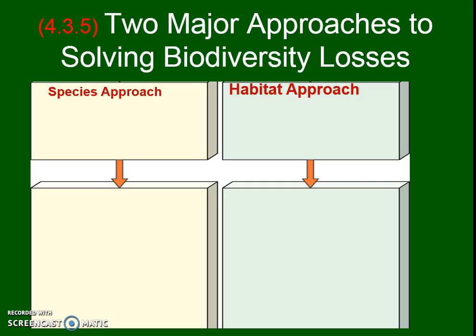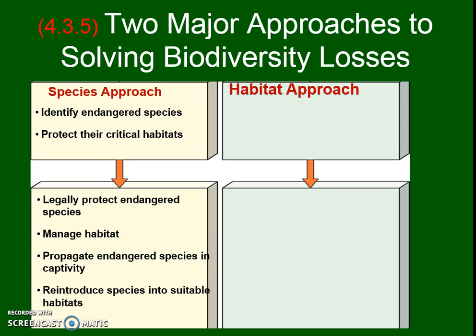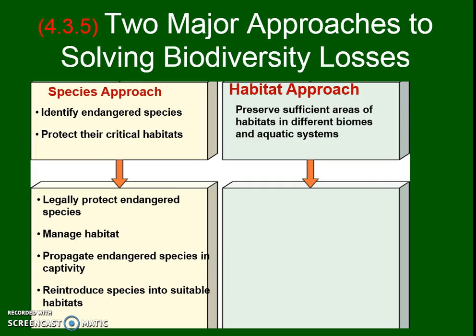This relates to the overall debate: is it better to have a species-based or habitat-based approach to conservation? With a species-based approach, we focus on a few endangered species — say, the elephant. We protect their critical habitat, which might be a very small area, and apply legal protections like the IUCN Red List or CITES, both through the UN internationally. We try to manage the habitat, propagate the endangered species in zoos, or if it's a plant, in a botanical garden, and eventually reintroduce them — though reintroduced species don't always do well.